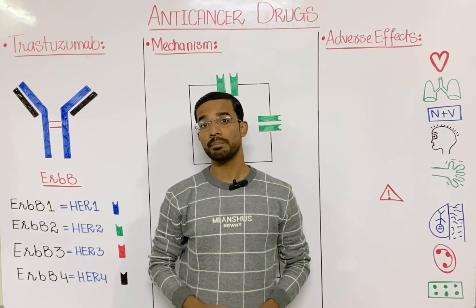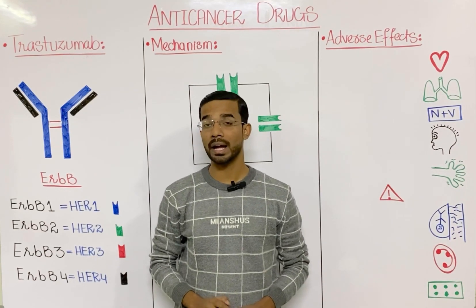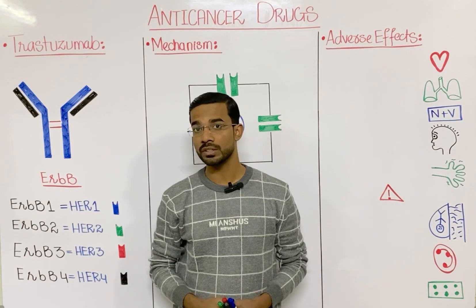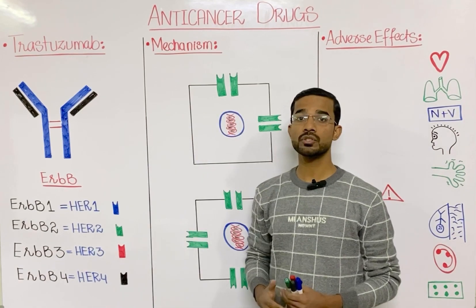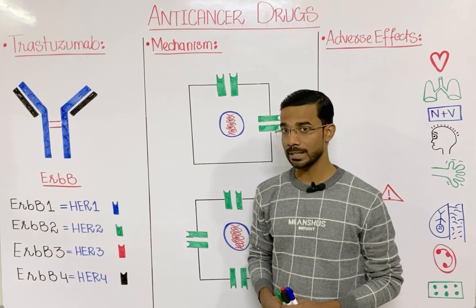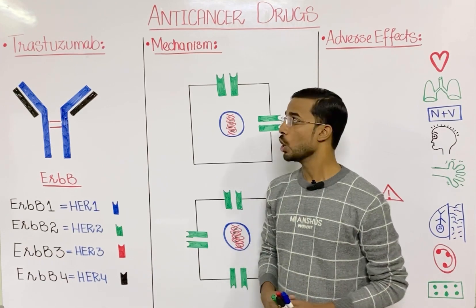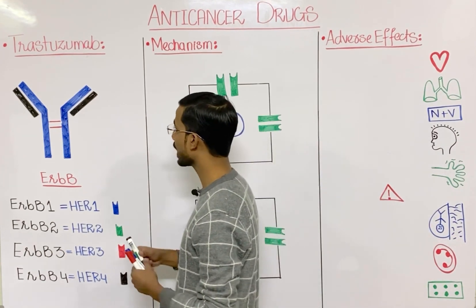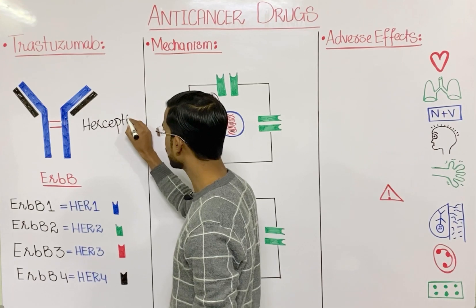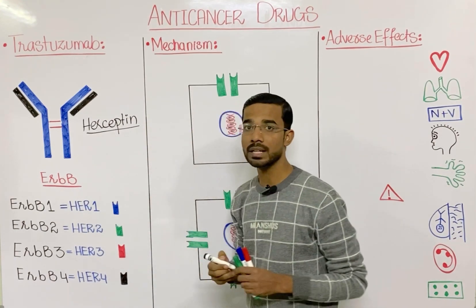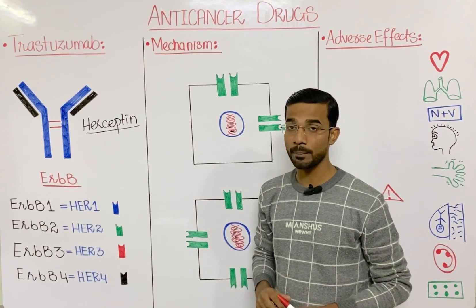Today we are going to discuss the most important anti-cancer drug, trastuzumab. In this lecture we will cover the mechanism of trastuzumab, clinical uses of trastuzumab, and the different adverse effects of trastuzumab. Trastuzumab is basically a monoclonal antibody — it means that we can use this antibody against tumor cells. Trastuzumab has another name, and that is Herceptin.